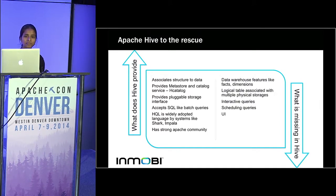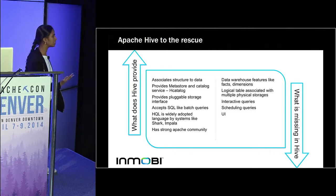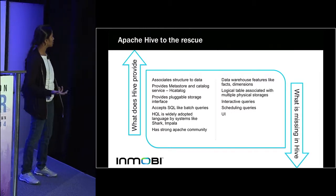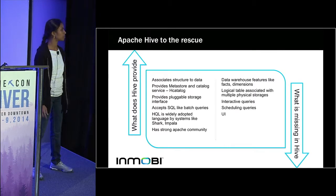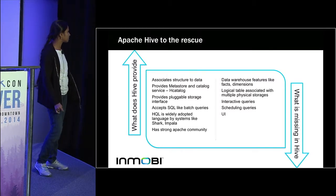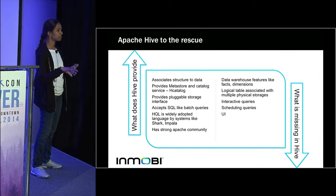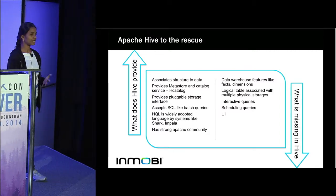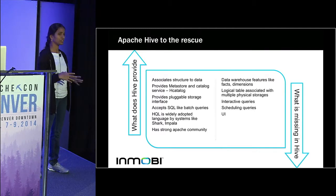But what is missing? For a business, data will always have facts and dimensions, but Hive doesn't give any notion of facts and dimensions. Also, there is a problem where a table is defined that is present in more than one location — on more than one cluster or in a DB with the same schema — so there is no notion of a logical table attached to multiple physical storages. Interactive queries are missing, you can't schedule queries (e.g., run a query every first of the month), and there is no drag-and-drop UI available.